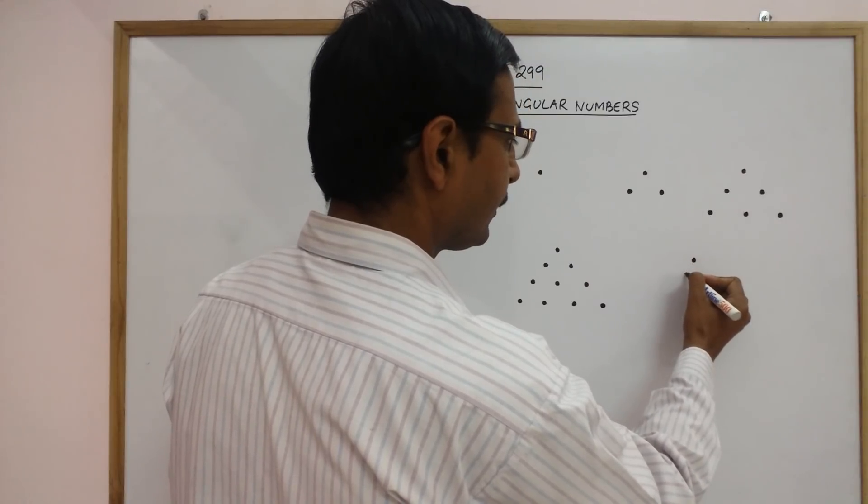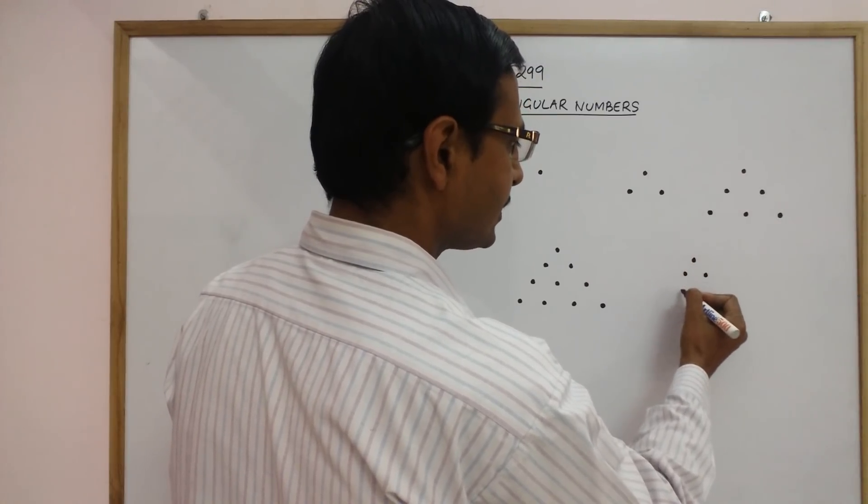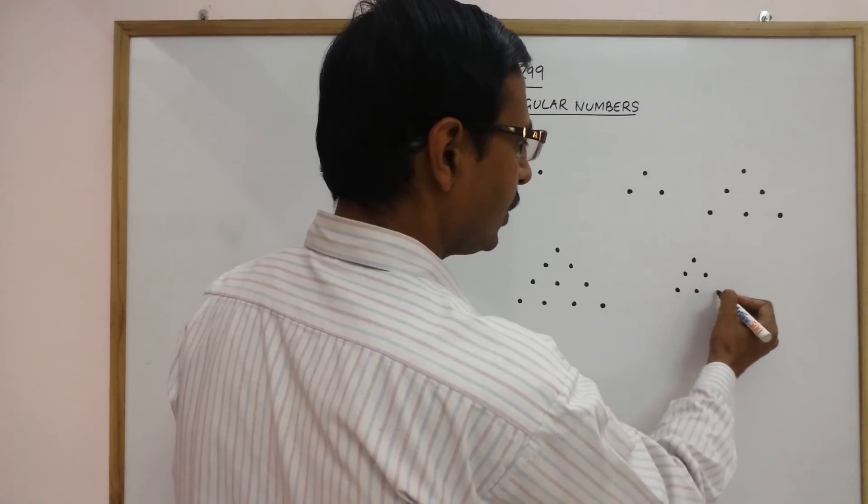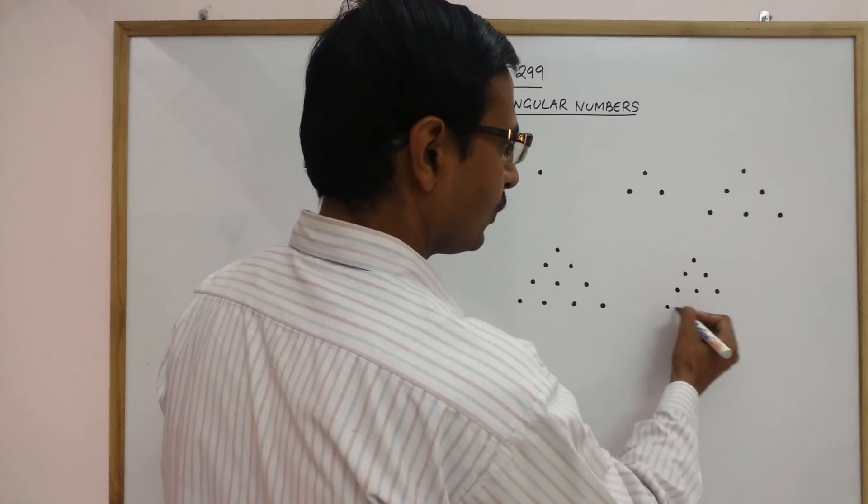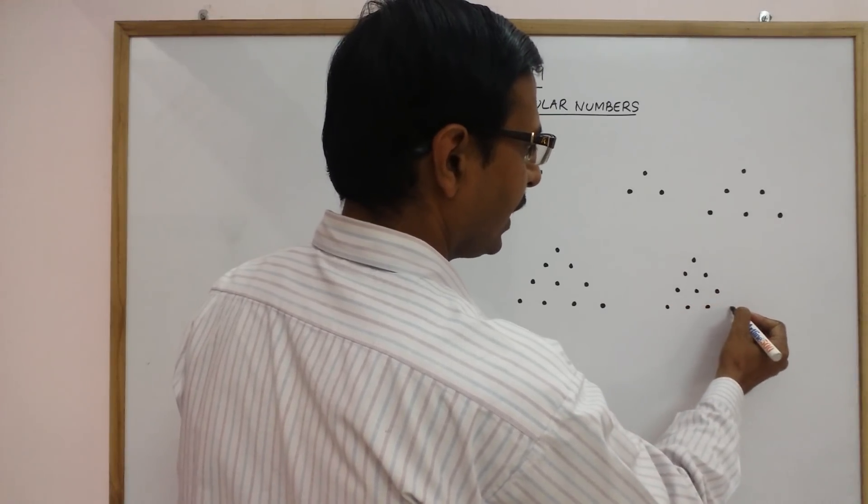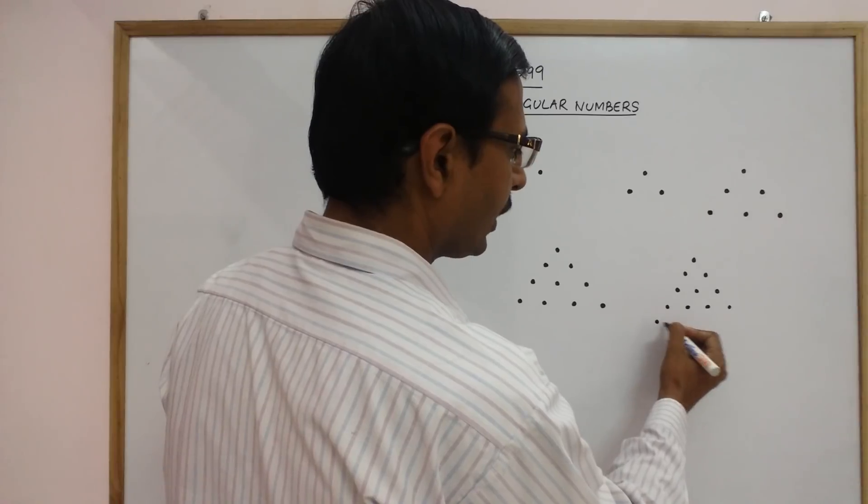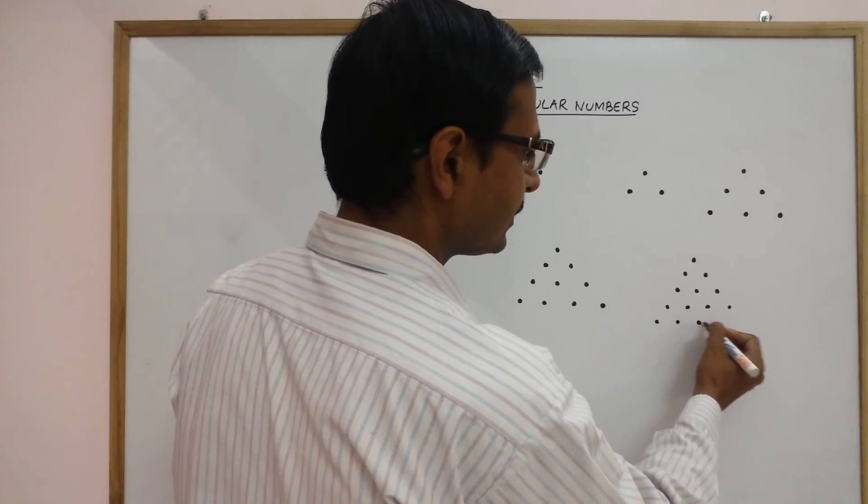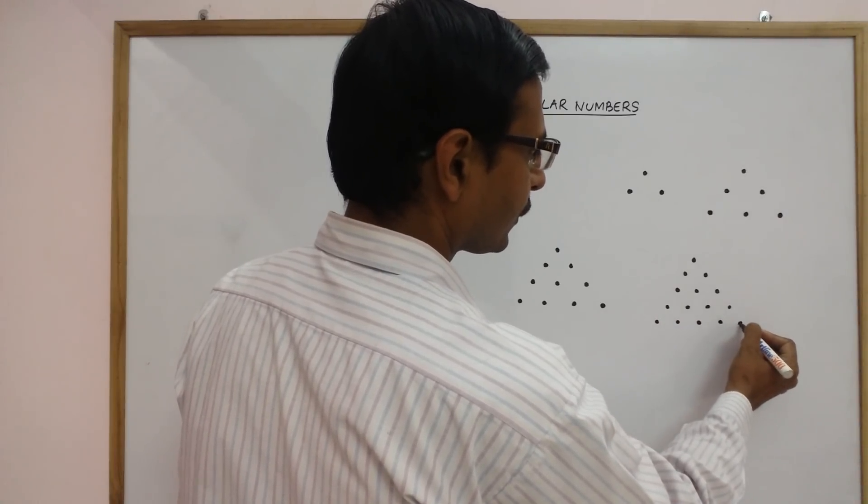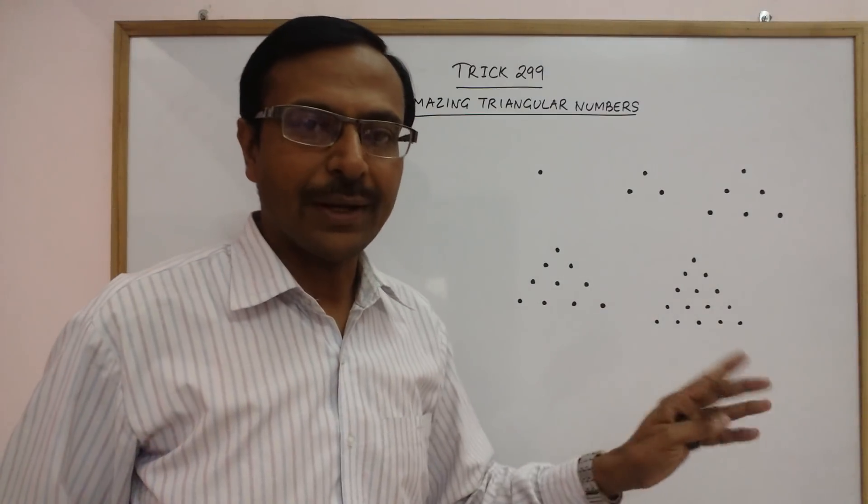1 dot, 2 dots, 3 dots, 4 dots and finally I add 1 more row containing 5 dots. So, this also forms the shape of a triangle.